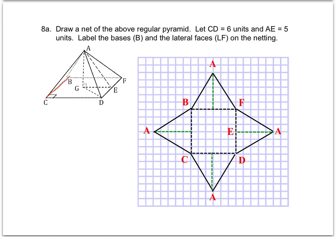Whenever you're drawing nets, I recommend starting with the base. We know the base is a square because it's a regular pyramid. We're told CD equals 6 and AE equals 5 — AE is the slant height of the pyramid. That's all the information we need to draw this net with the correct dimensions. Starting with that square base of 6 in the middle of your grid paper, draw a square that's 6 by 6 by 6 by 6, label those edges 6, and then add the lateral faces, which each coincide with one of the edges of the square base.